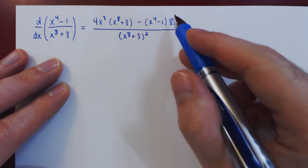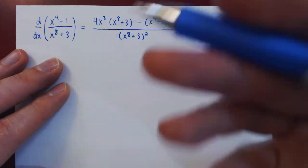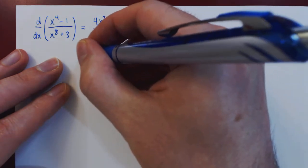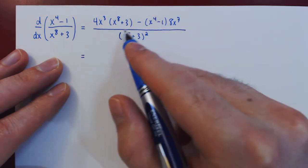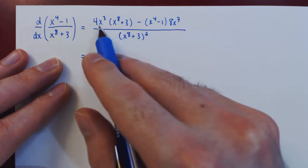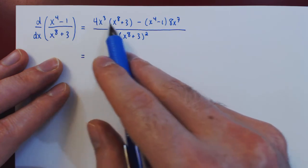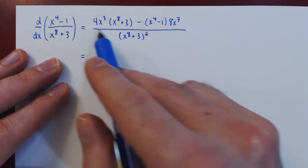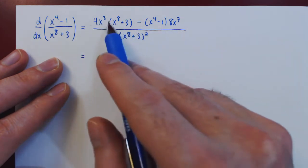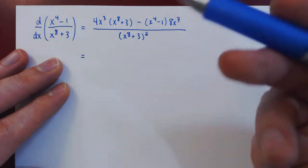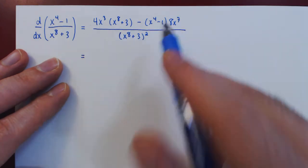So now we have the derivative. So we have our answer, but let's see if we can simplify it. The denominator is already fully simplified, so we simply have to work now on the numerator. Before we multiply things out, notice that there are some common pieces between the first and second terms we can factor before we multiply things out.